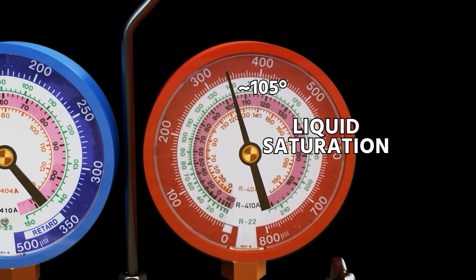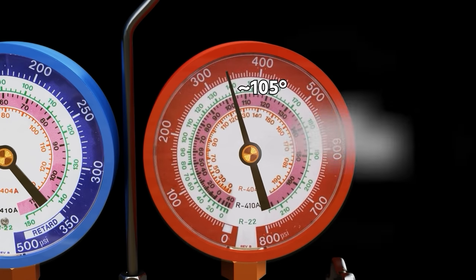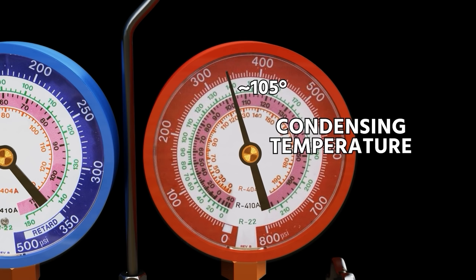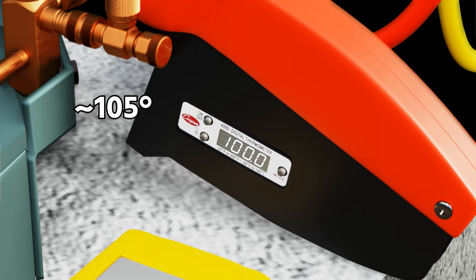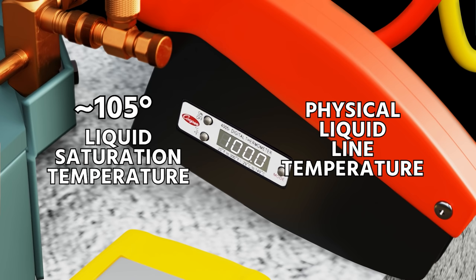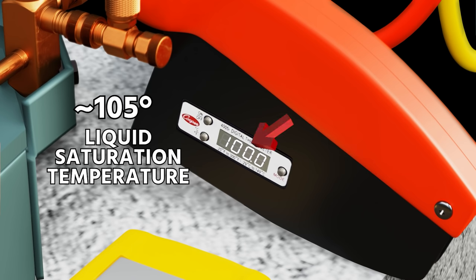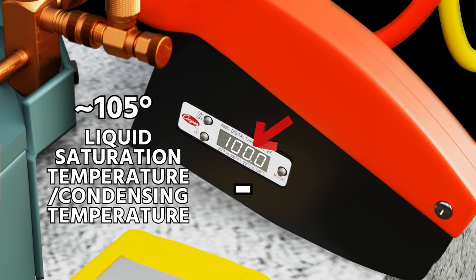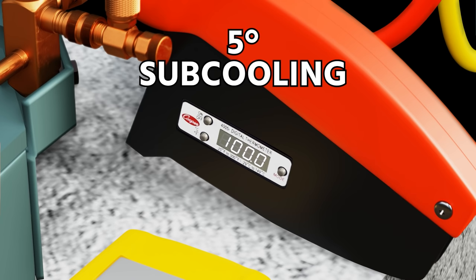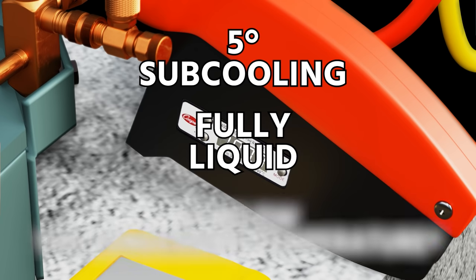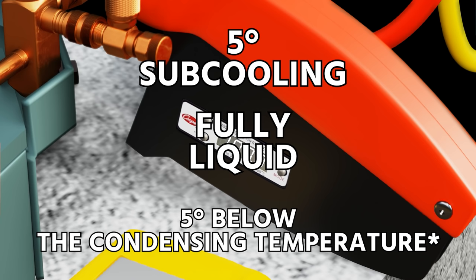So next, we have to compare that 105 degree liquid saturated temperature to our physical liquid line temperature, and that's what we're clamped onto here with our Cooper-Atkins clamp, and we can see it's 100 degrees. If we take 105, which is our liquid saturation or our condensing temperature, we subtract our actual measured liquid line temperature, we see that we have 5 degrees of subcooling, meaning that it's fully liquid. We are cooled 5 degrees below our liquid line temperature.